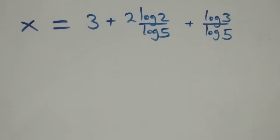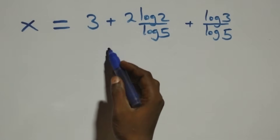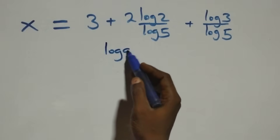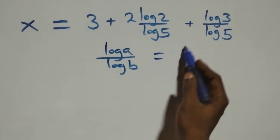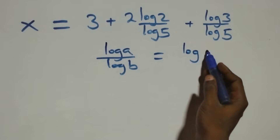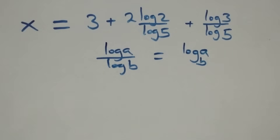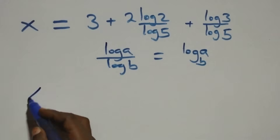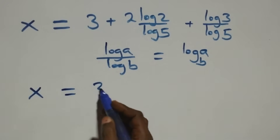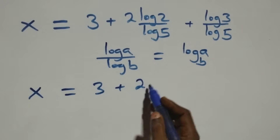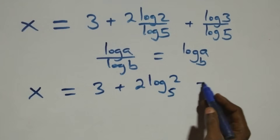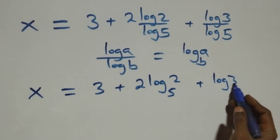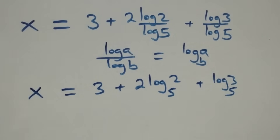We apply the change of base rule: log A over log B is the same as log A to base B. So the final answer is x equals 3 plus 2 log₅2 plus log₅3. That is the value of x.